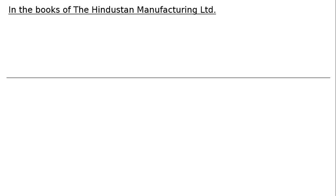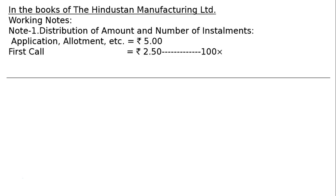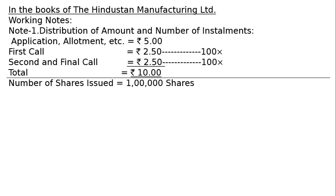We also need to prepare the balance sheet of the company - covering the second call cash entry, forfeiture, reissue, capital reserve, and balance sheet. This is a very important question from the board exam point of view. Working Note 1: Distribution of amount - the two calls are Rs.2.50 and Rs.2.50, totalling Rs.5. First call Rs.2.50 not paid by D (holder of 100 shares); second and final call Rs.2.50 also not paid by D. Total per share: Rs.10. Number of shares issued: 1 lakh (Rs.10 lakh ÷ Rs.10).